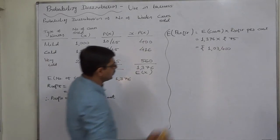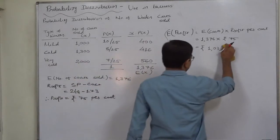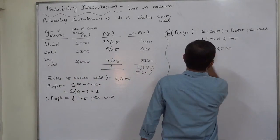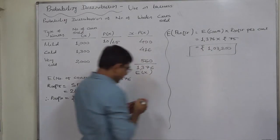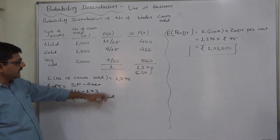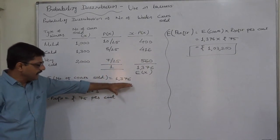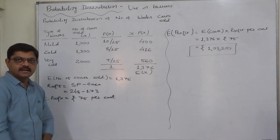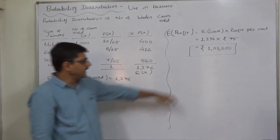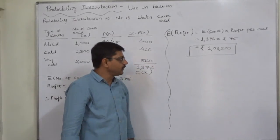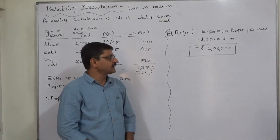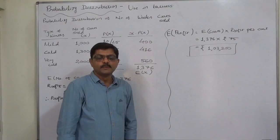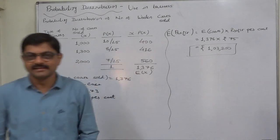Correcting the earlier figure — it is not 400, it is 200, so the total is rupees 1,03,200. The company can expect that, irrespective of the type of winter, they can sell 1376 woolen coats and earn a profit of rupees 1,03,200. That's it. Thank you very much.